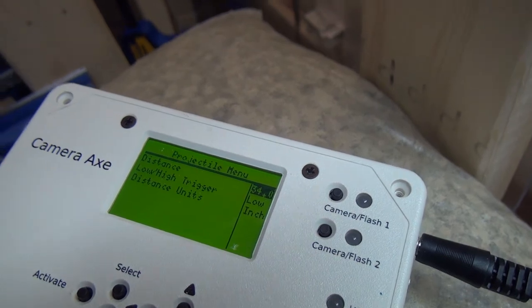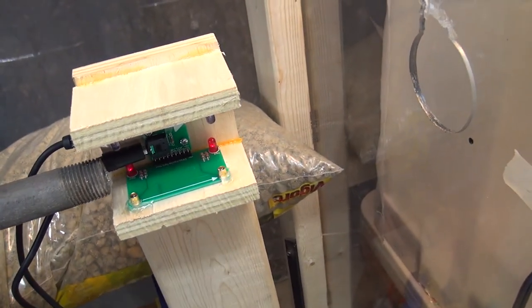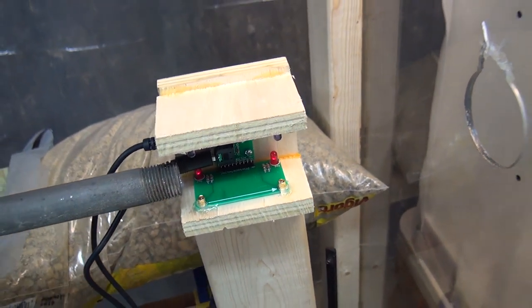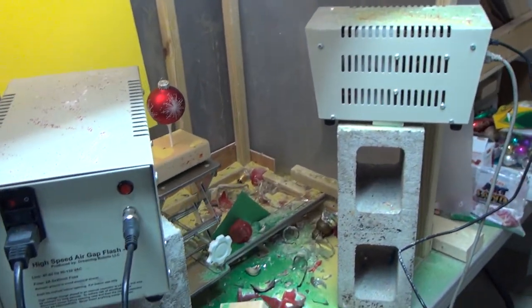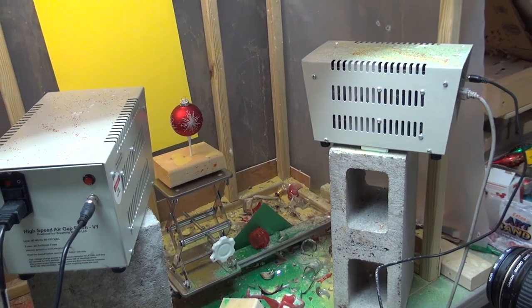So you just enter in a distance from right here that you want the bullet to be when the flashes are activated. So it's really simple to set up. And there's a pair of the air gap flashes I've made and I've done videos about those.